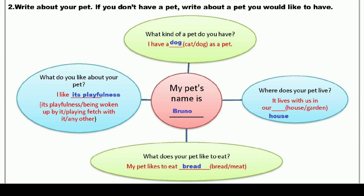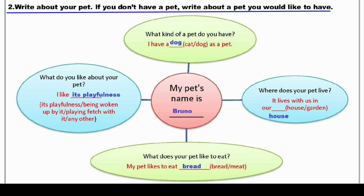Now we'll move on to question number two. Write about your pet. If you don't have a pet, write about a pet you would like to have. اپنے pet کے بارے میں کچھ بتانا ہے، کچھ لکھنا ہے۔ اور اگر آپ کے پاس کوئی پالتو جانور نہیں ہے، تو اس کے بارے میں سوچئے جس کو آپ پسند کرتے ہیں یا اپنے گھر میں رکھنا چاہتے ہیں — اس کے بارے میں لکھ سکتے ہیں۔